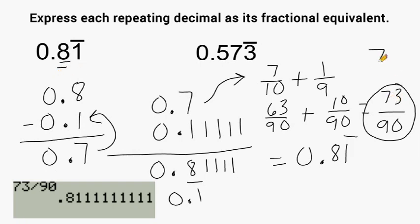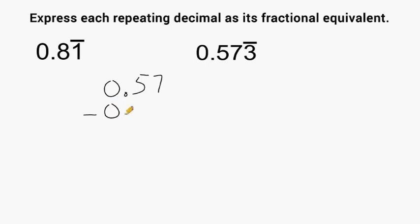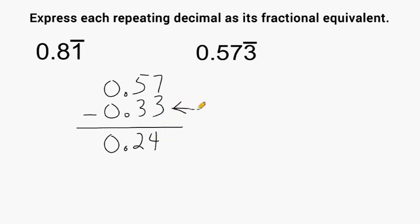So 73 over 90 is equivalent to 0.8 repeating one — if we take 73 divided by 90 we get 0.8 with a one repeating. Now let's look at this next value. We start by writing everything up until the repeating portion: 0.57. We have two digits that are not repeating, so we subtract the repeating portion — written two times because we have two non-repeating digits — so we subtract 0.33 from 0.57.